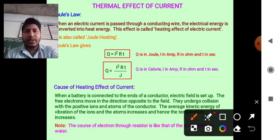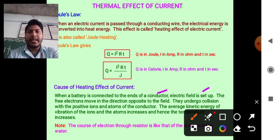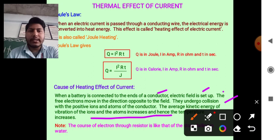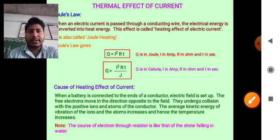When a battery is connected to the ends of a conductor, an electric field is set. The free electrons move in the direction opposite to the field. They undergo collision with the positive ions and the atoms of the conductor. The average kinetic energy of vibrations of the ions and atoms increases, and hence the temperature increases.